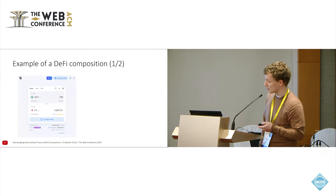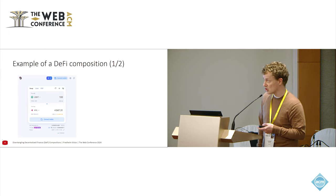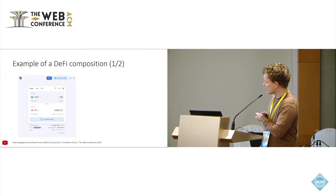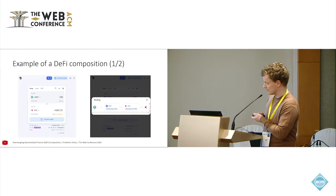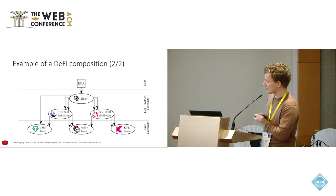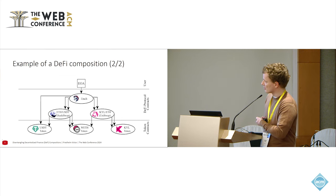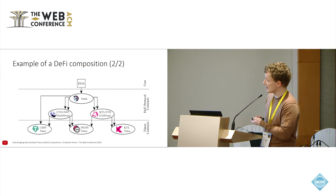Here's an example of a DeFi composition. Suppose you use the service 1inch — you'd go to their website and maybe you want to exchange one asset for another, namely USDT against KYL. They would give you some rate and show a route, essentially using SushiSwap and Uniswap to perform this swap. From a graph perspective, there is an external user who sends a transaction to 1inch, which in turn makes transactions with SushiSwap and Uniswap, both of which call these crypto assets. That's a composition.